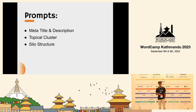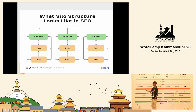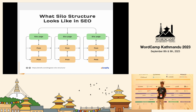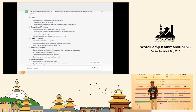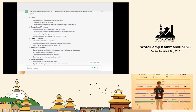Another important concept is the silo structure. A silo structure helps organize your website content. For example, in the educational domain, you might have categories for study abroad programs and career counselling. Preparing a proper silo structure for your domain helps Google navigate and understand your site better, which improves overall rankings.